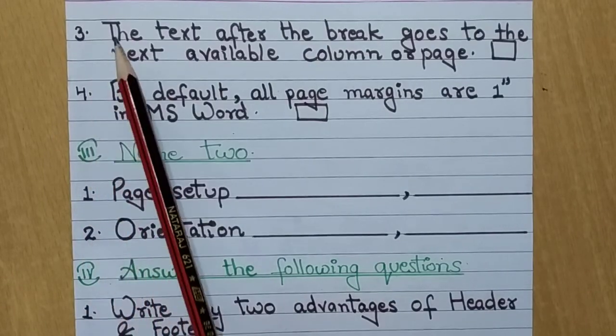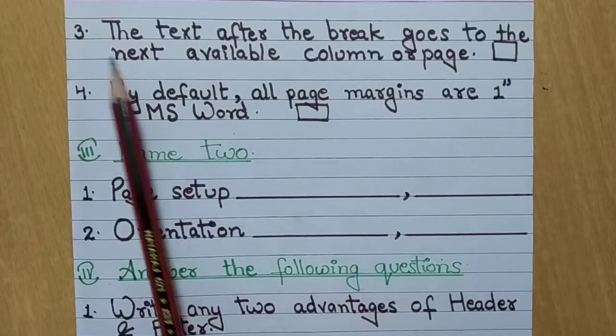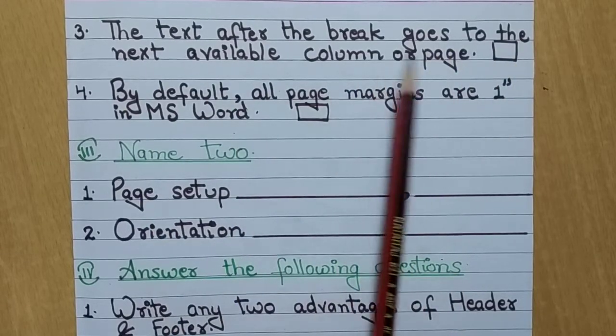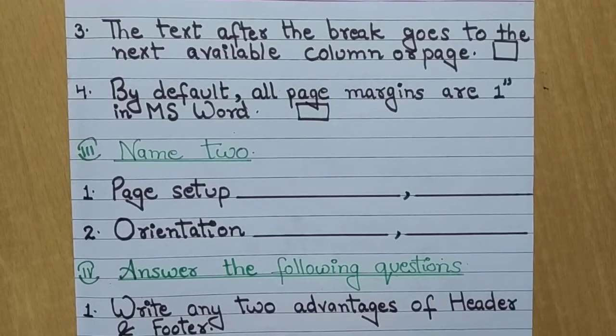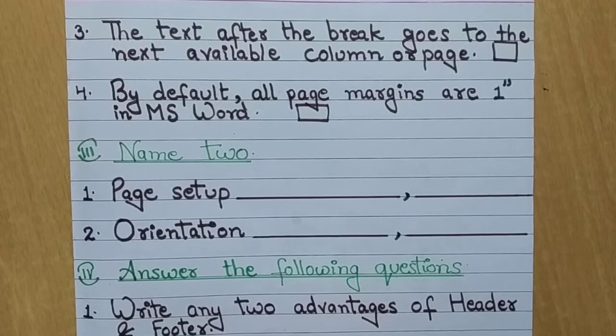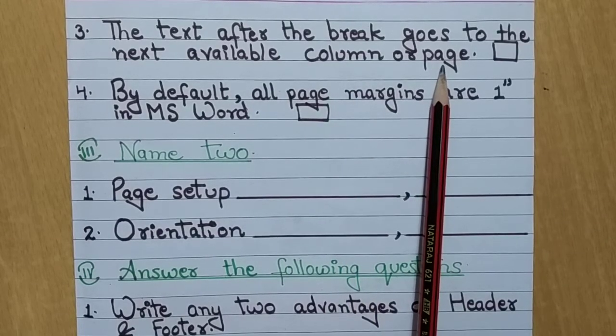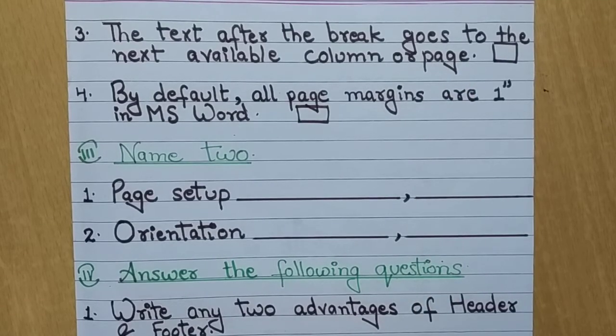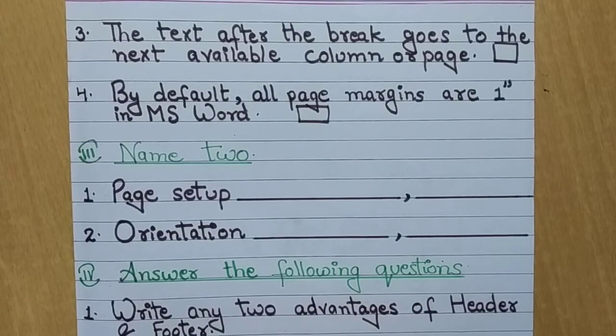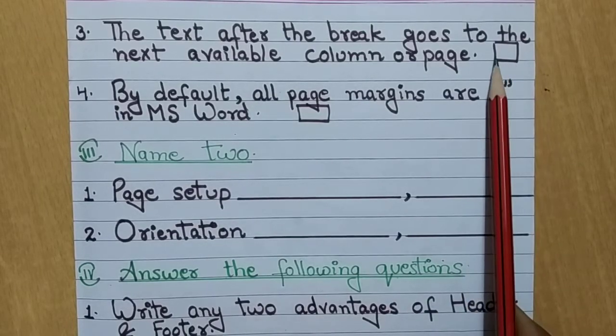The third number is the text after the break goes to the next available column or page. So this statement is true or false.